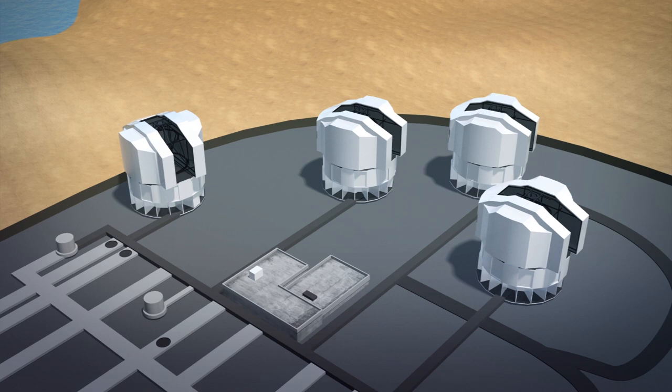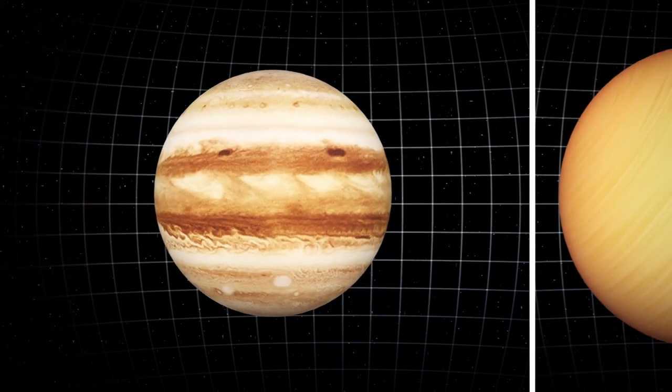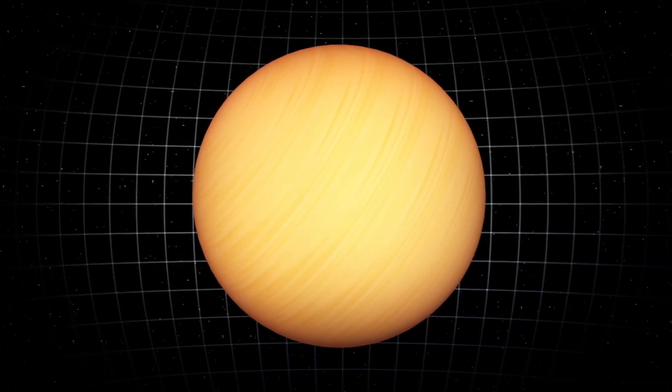Using the gravity instrument on ESO's Very Large Telescope Interferometer, ESO scientists found that HR 8799e is a super-Jupiter. It is much more massive than any planet in our solar system, but also younger.